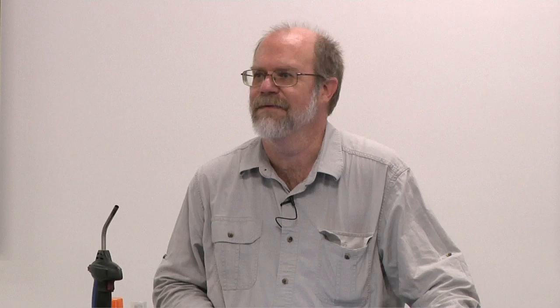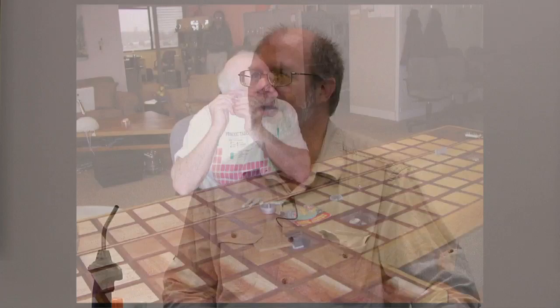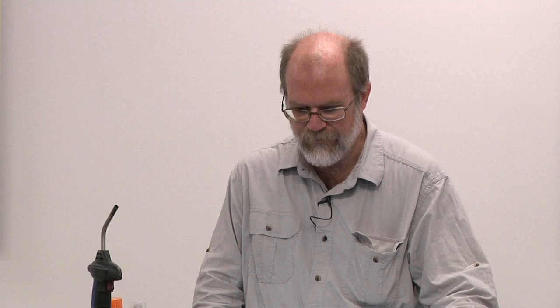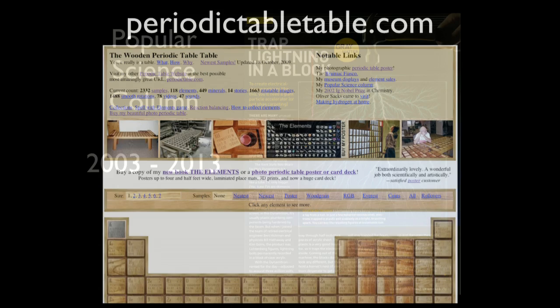I've since had to add two more display cases to hold the various elements. Oliver Sacks heard about this and the fact that it was his fault I built the table, so he came to visit — and that was cool. Then I got the Ig Nobel Prize, which is awarded for achievements that cannot or should not be replicated. I think of that as pretty much the only honor for which a periodic table table is actually eligible. So I made a crappy website, and then I got a call from Popular Science asking if I'd like to write a column.